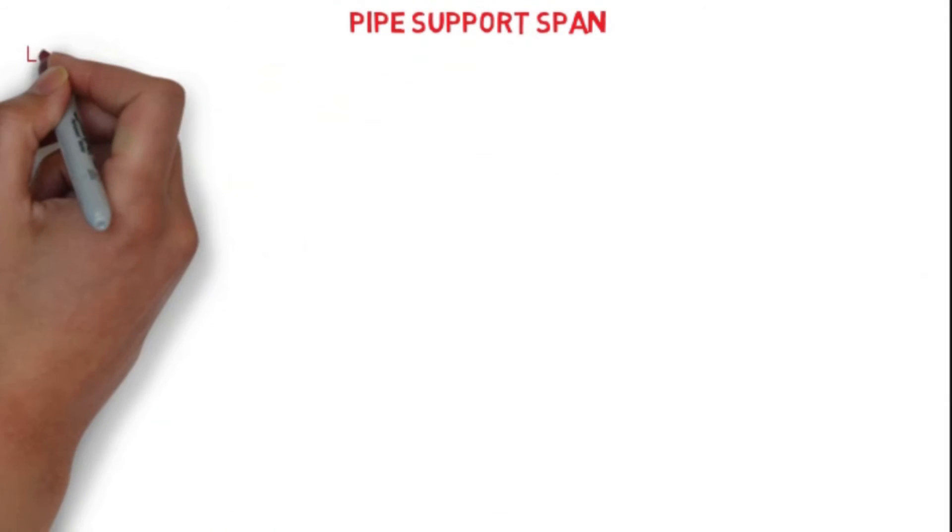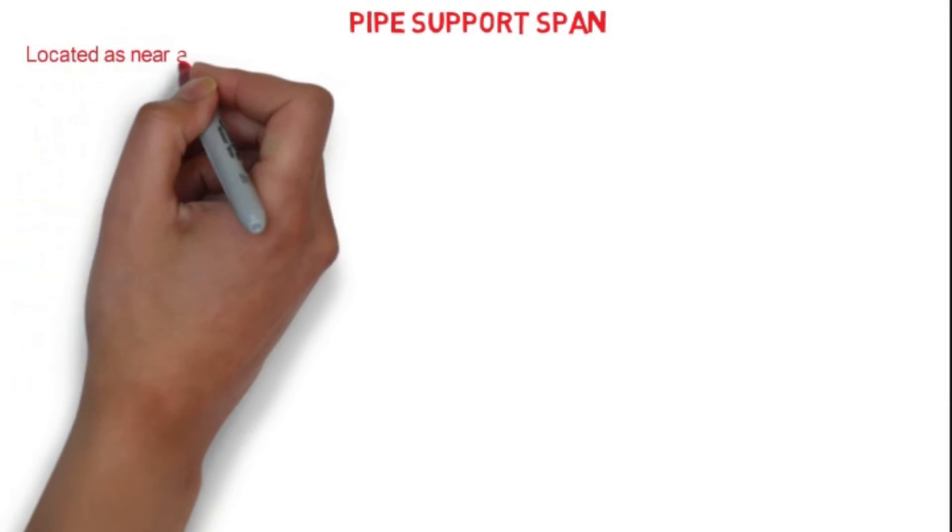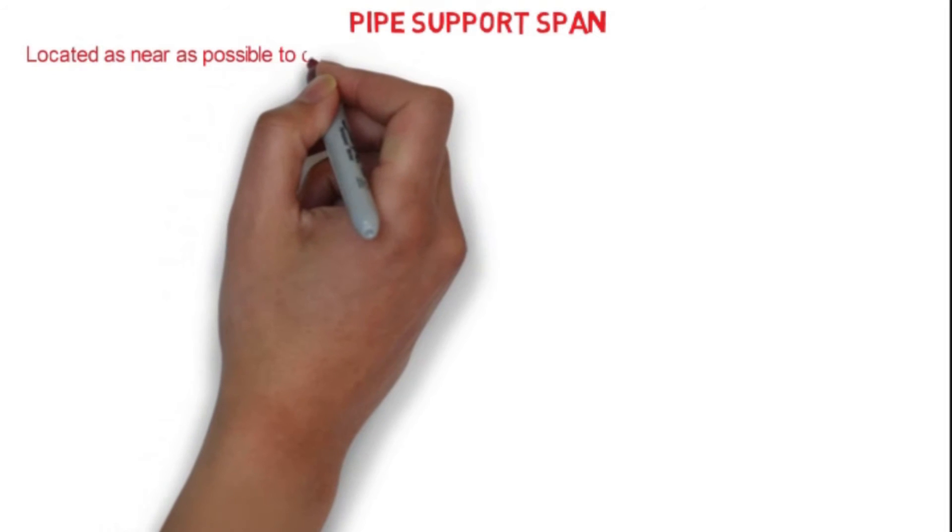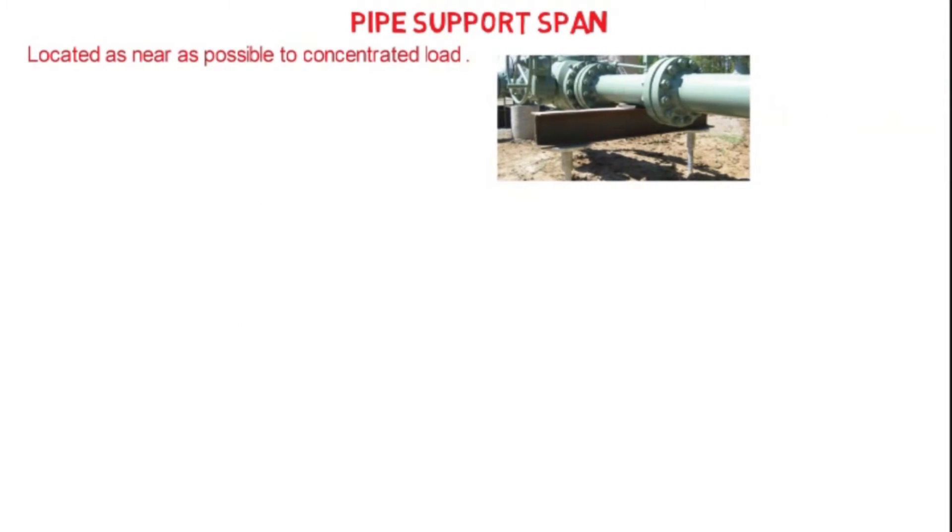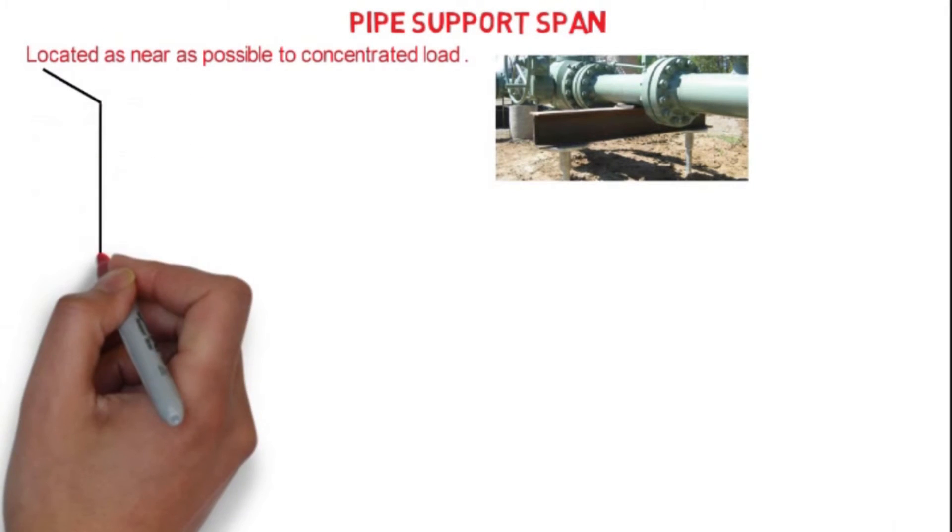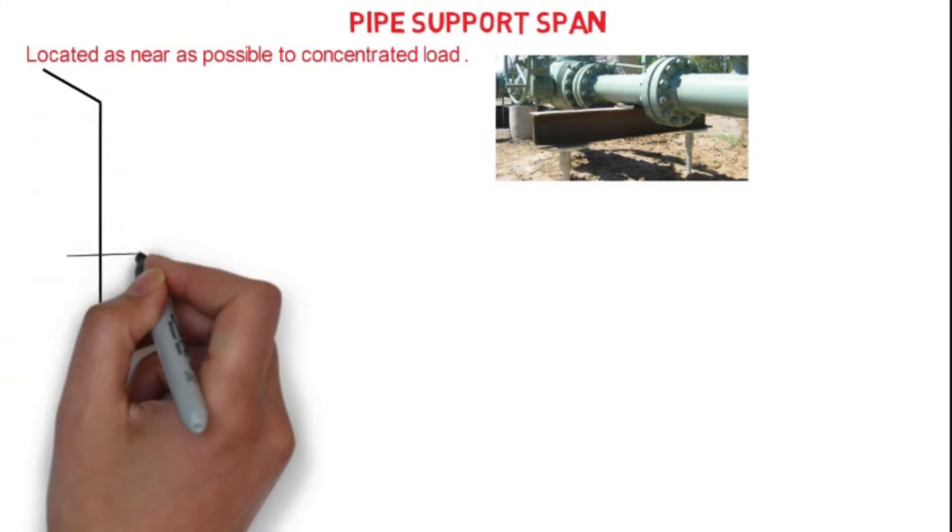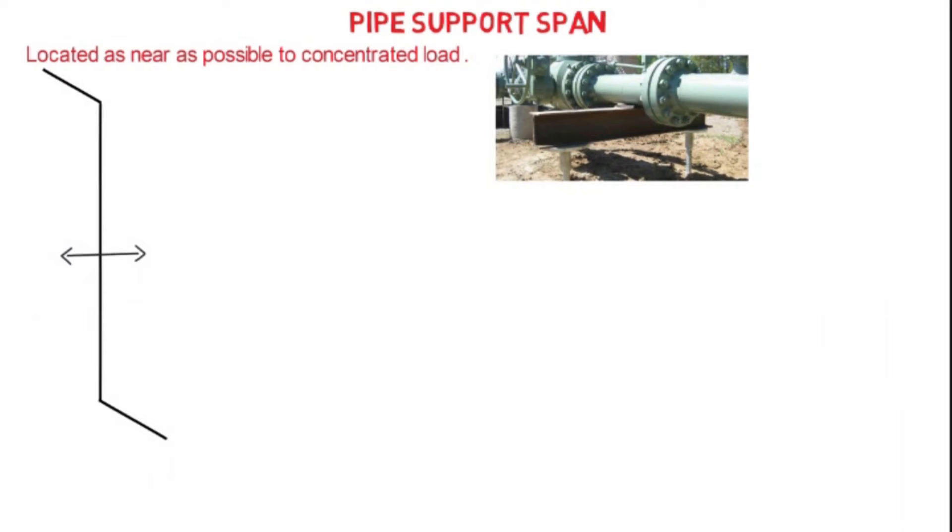At some points we need to remember while maintaining the gap between the support: the support to be located as near as possible to the concentrated load. Standard pipe span does not apply to the vertical run since no moment and no stress will develop due to the gravity load.